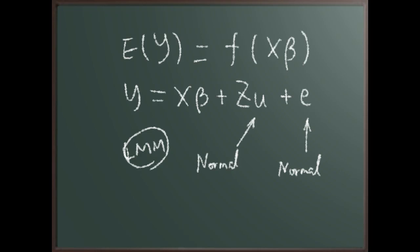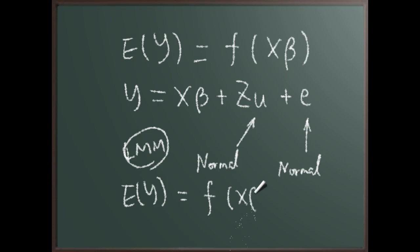To extend this: if we model the expectation of y as a function of such a linear predictor and allow different distributions for y, then this is a generalized linear mixed model, or GLMM. We allow more distributions for y, but in GLMM the random effect term is still normally distributed.